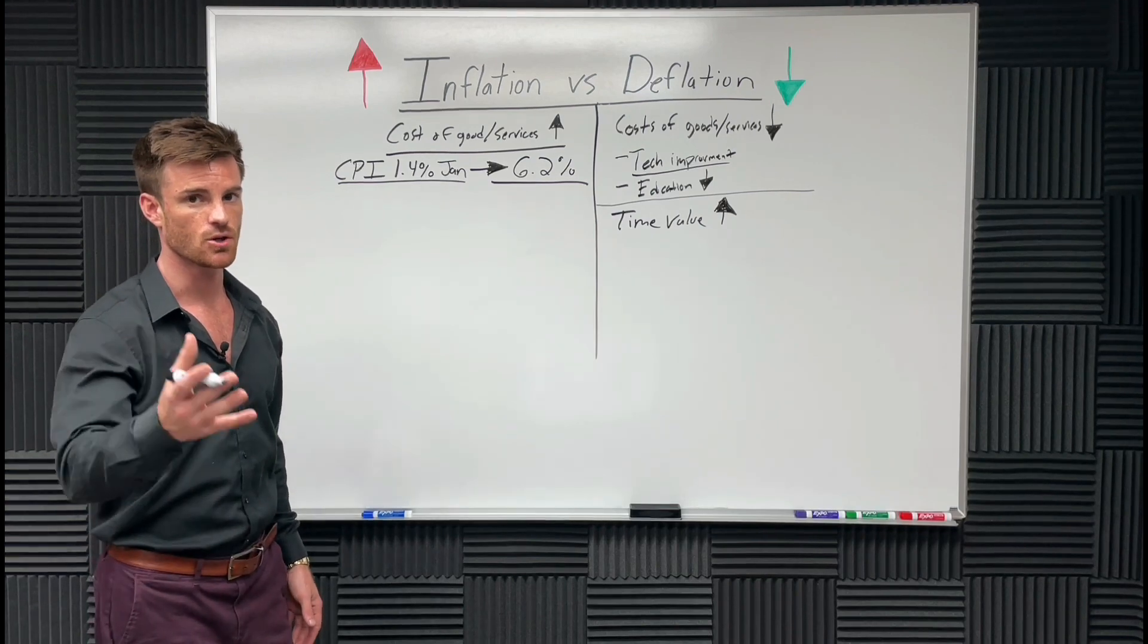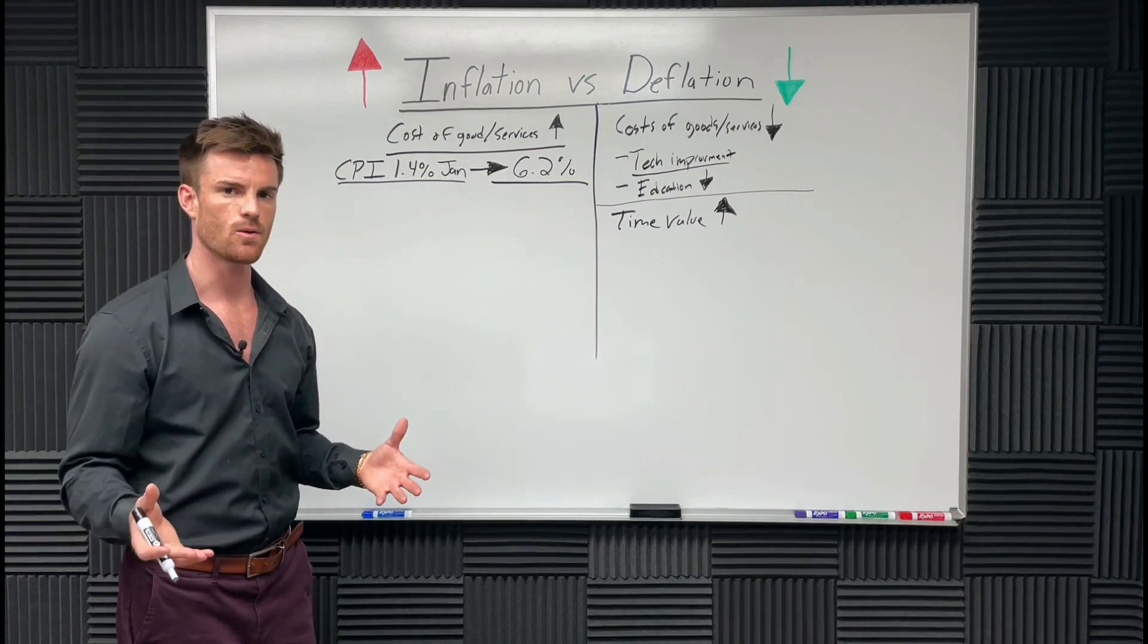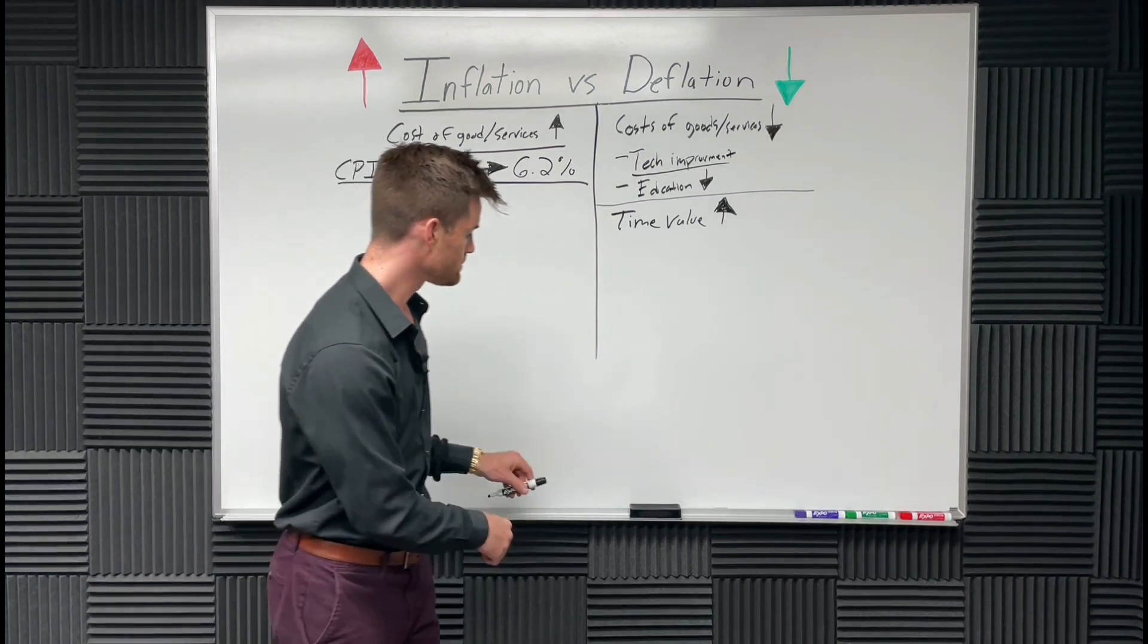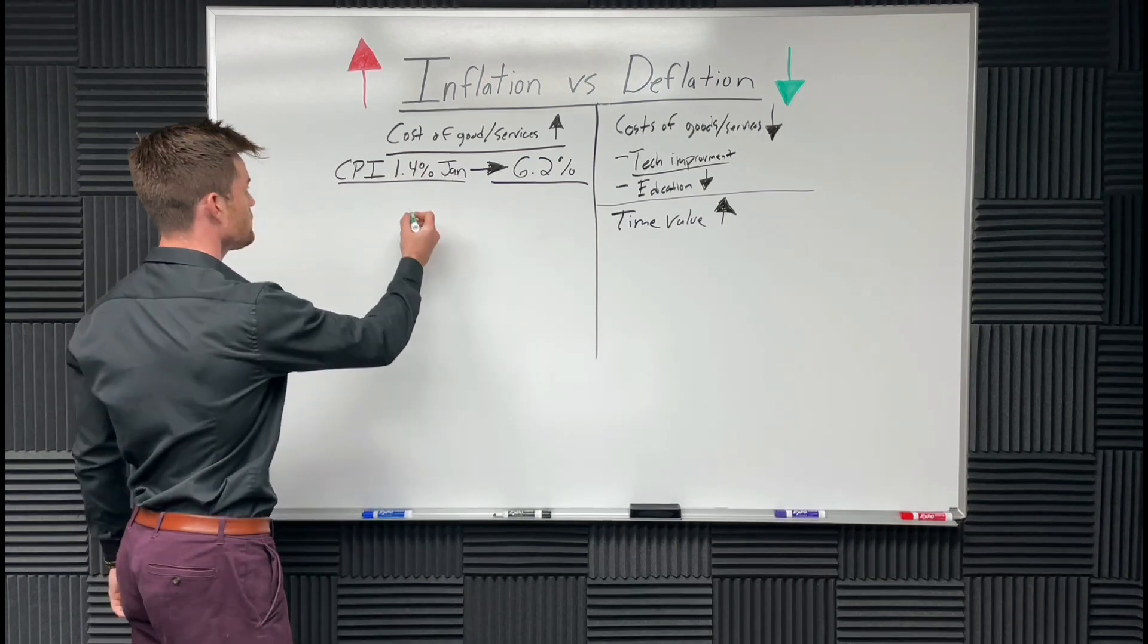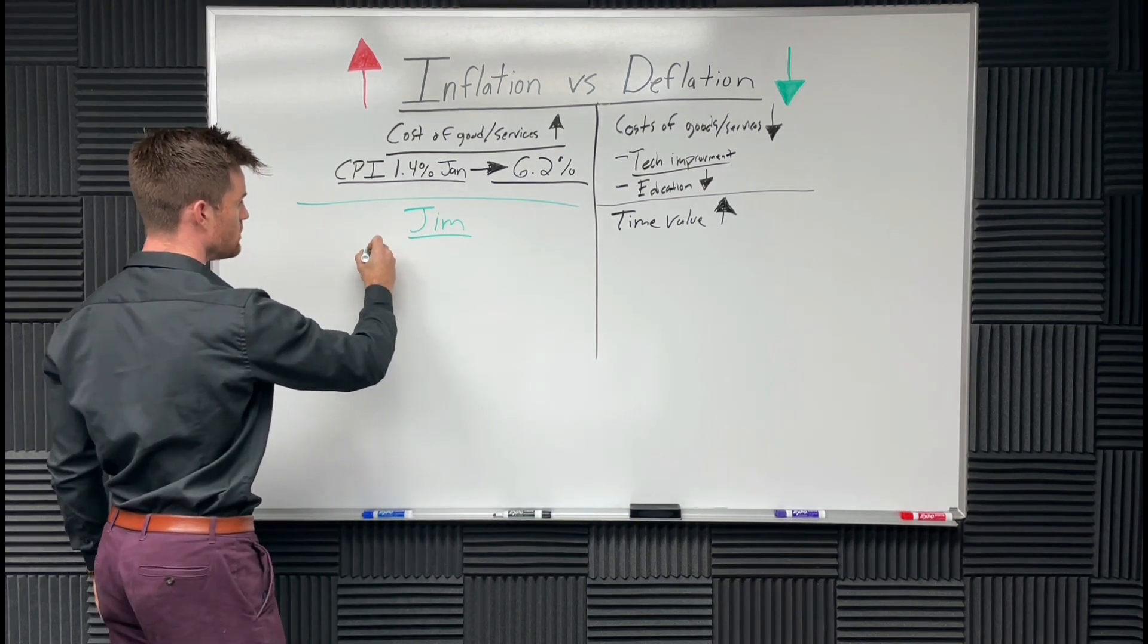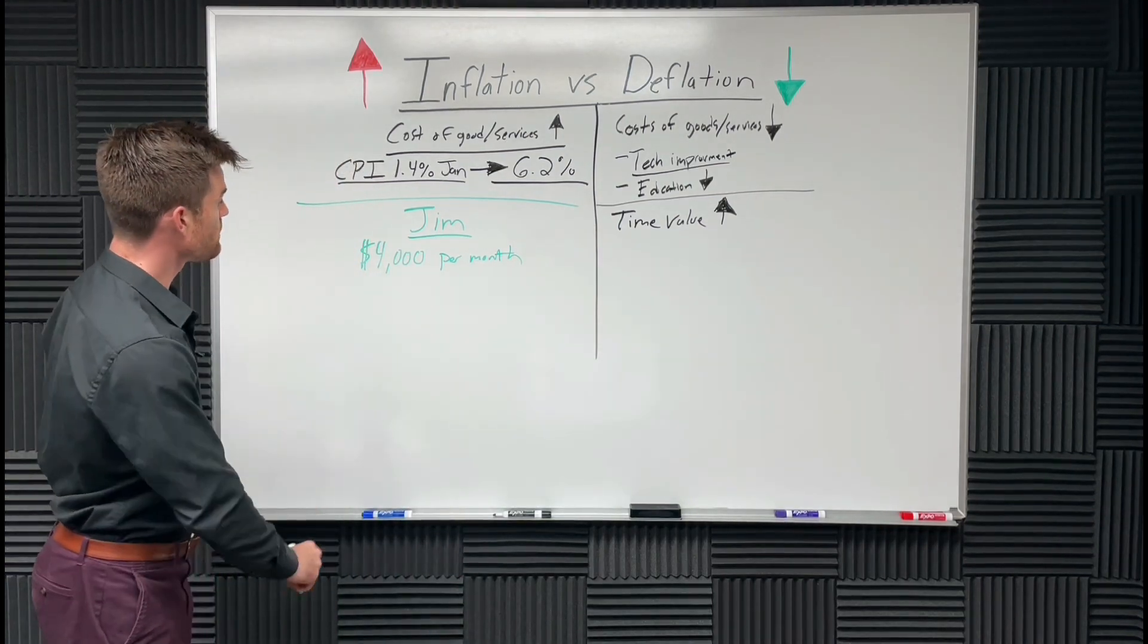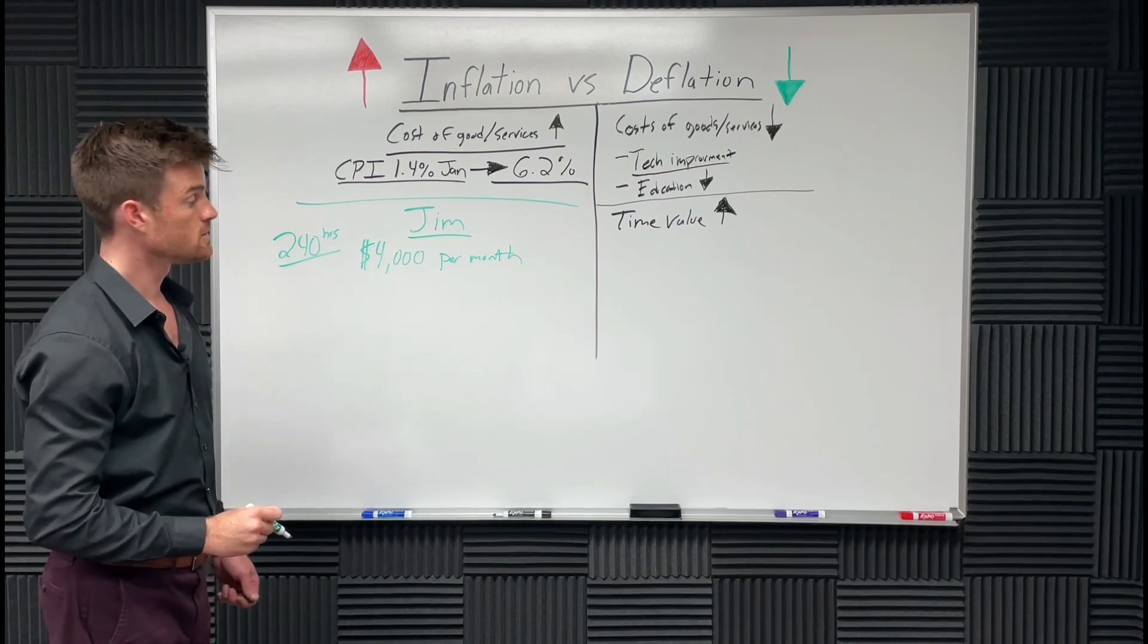How is money time? Money is time because if you're on a salary, you're giving up roughly 50, 60 hours a week, right? You're giving up 240 hours a month for this salary you get paid every month. Let's do an example here. Let's say Jim makes $4,000 a month. What does this mean? Jim is willing to give up 240 hours of his time for $4,000 a month. It's quite a bit of time.